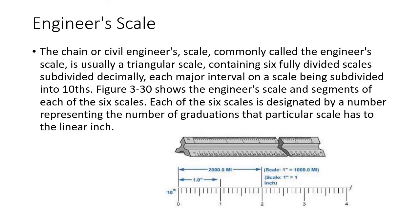Engineer scale. The chain or civil engineer scale, commonly known as the engineer scale, is usually a triangular scale containing six fully divided scales, subdivided decimally, each major interval on the scale being subdivided into tenths. Figure 3-30 shows the engineer scale and the segments of each of the six scales. So I pulled this out of a military manual. Each of the six scales is designated by a number representing the number of graduations that particular scale has to the linear inch. So this one, you can see, is 10. They've got 10 on it, so every inch is divided into tenths.